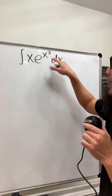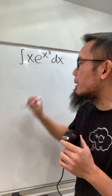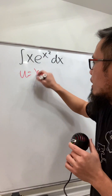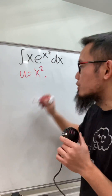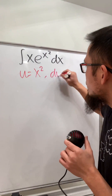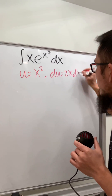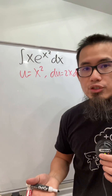I'm going to show you how to integrate x times e to the x squared. For this, we can just do u-sub. Let u equal to x squared, and then differentiating both sides, we'll just get du is equal to 2x dx.